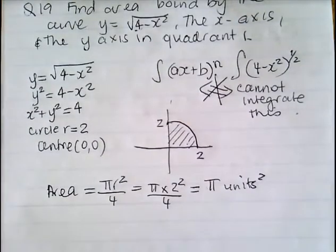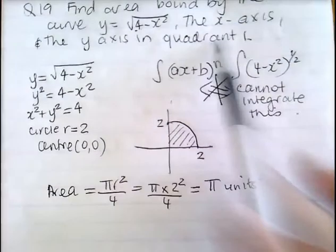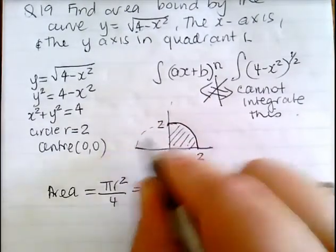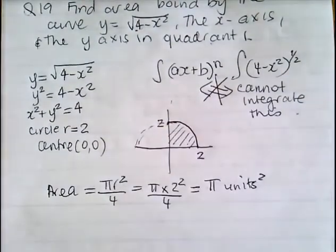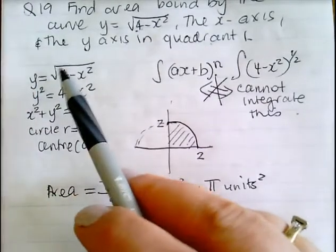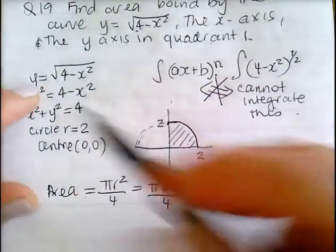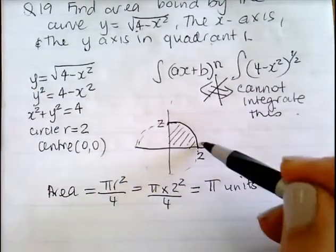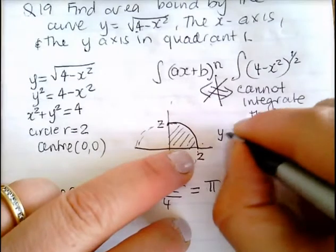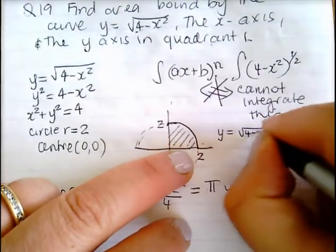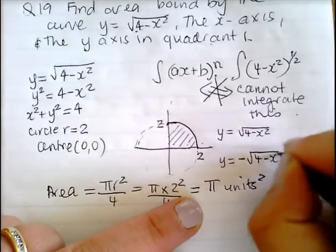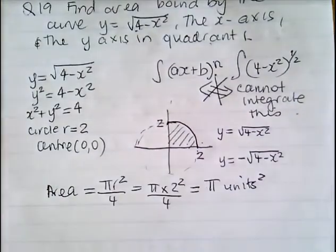Please don't make that mistake with that type of function. They just wanted it in the first quadrant. If they hadn't specified, it would have been the semicircle on top of the x-axis because y equals the positive square root of 4 minus x squared. If it were the negative square root, it would be the lower semicircle.